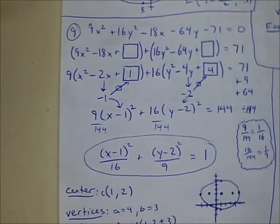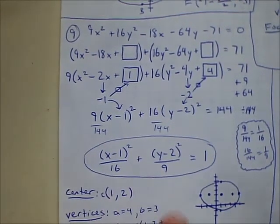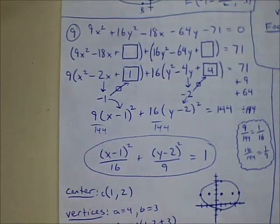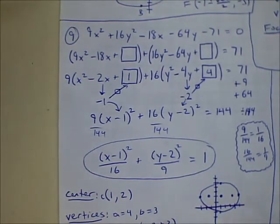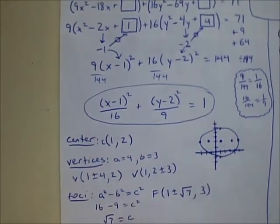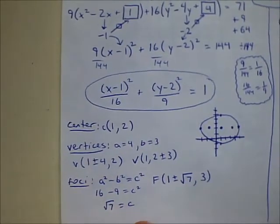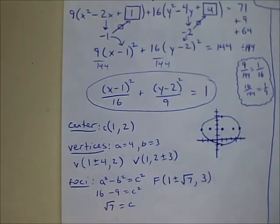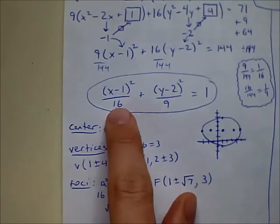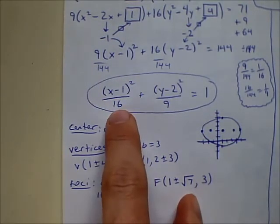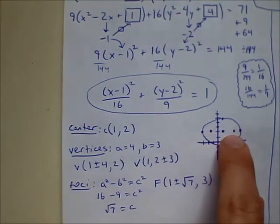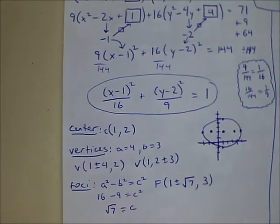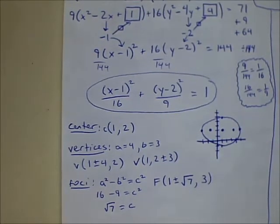We end up with the combined equation, then divide by 144 across the board. Each fraction reduces, giving us the standard form equation. The center is at (1, 2). A is in the X direction — a wide ellipse — with A = 4 and B = 3. C is the square root of 7. The foci are in the X direction since that's where the bigger denominator is. There are the foci — not that close to the edge in this case.